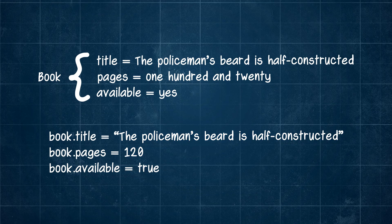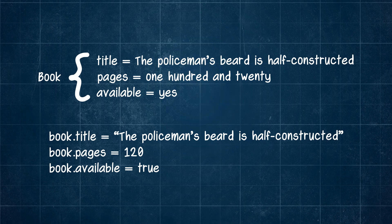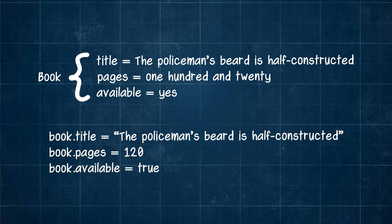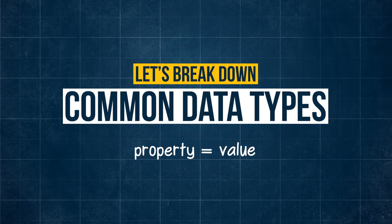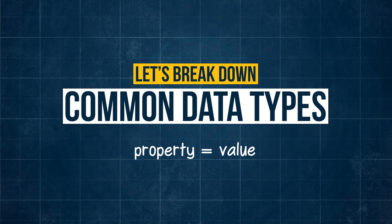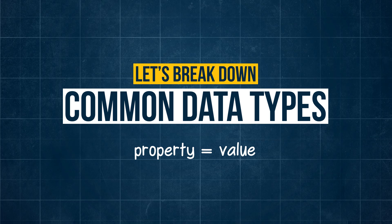Each value can be, or must be, a specific data type for programming to work. So let's break down the common data types in programming and how to define each in this property value setting.